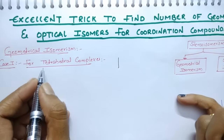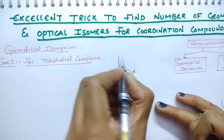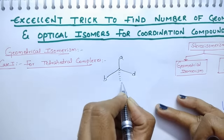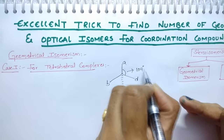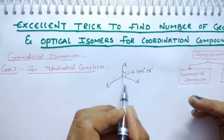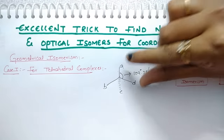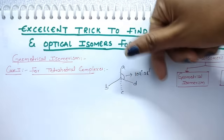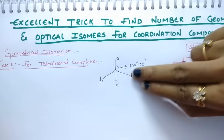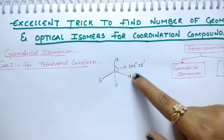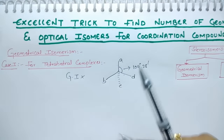Geometrical isomerism. For tetrahedral complexes, there is no geometrical isomerism. If you see a complex, the angle between any two ligands is 109 degrees 28 minutes — and the angle is the same throughout. So if you flip A and B, you get the same angle between the two. There is no change in the stereo arrangement, meaning tetrahedral complexes do not exhibit geometrical isomerism.